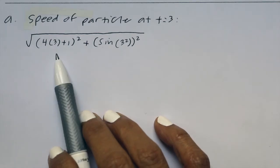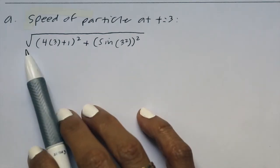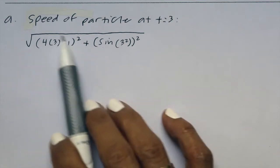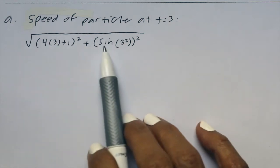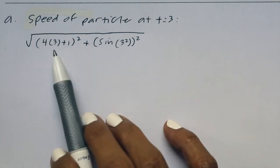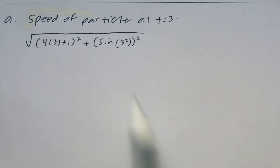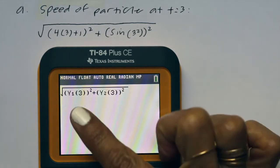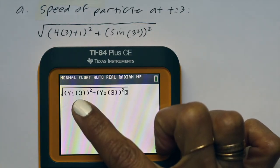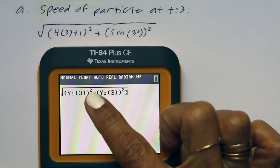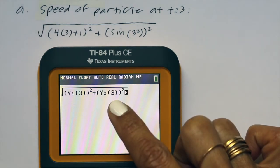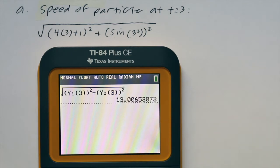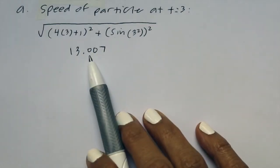To find the speed of the particle when t equals 3, we use the speed formula: square root of dx/dt squared plus dy/dt squared, with 3 plugged in for t. I plugged in dx/dt as y1 and dy/dt as y2. So we have the square root of dx/dt at t=3 squared plus dy/dt at t=3 squared, and you get 13.007. So our speed is 13.007.